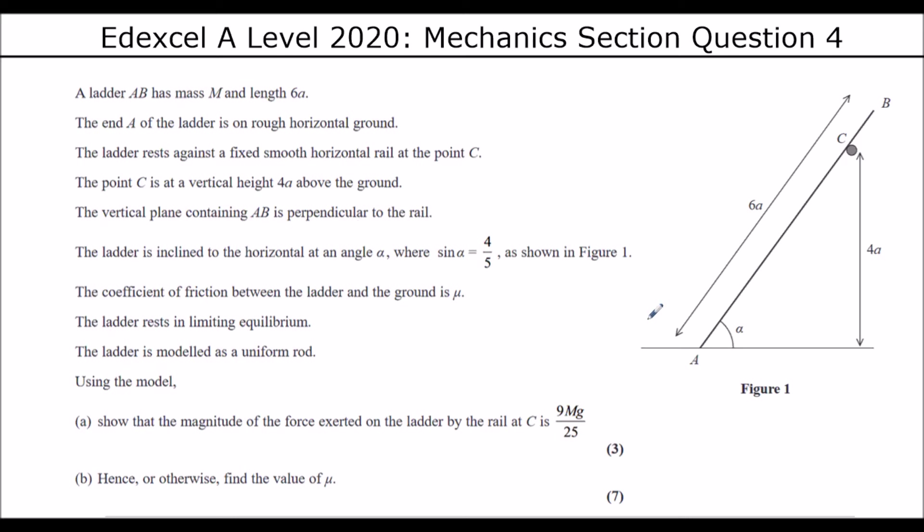So we have a rough ground with friction mu, stopping the ladder from sliding. So it would be sliding that way, so opposing the motion will be mu times r, the maximum friction. We're going to have a normal reaction at A, which is perpendicular to the ground, the reaction at A, and a reaction at C, which is perpendicular to the rod.